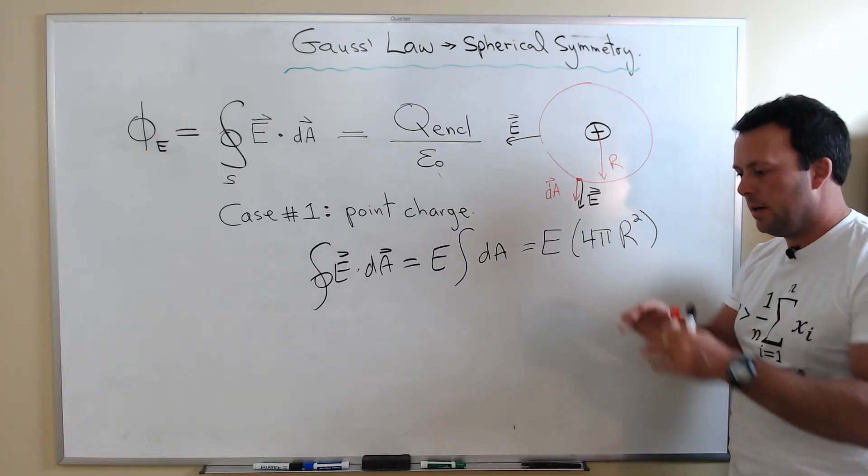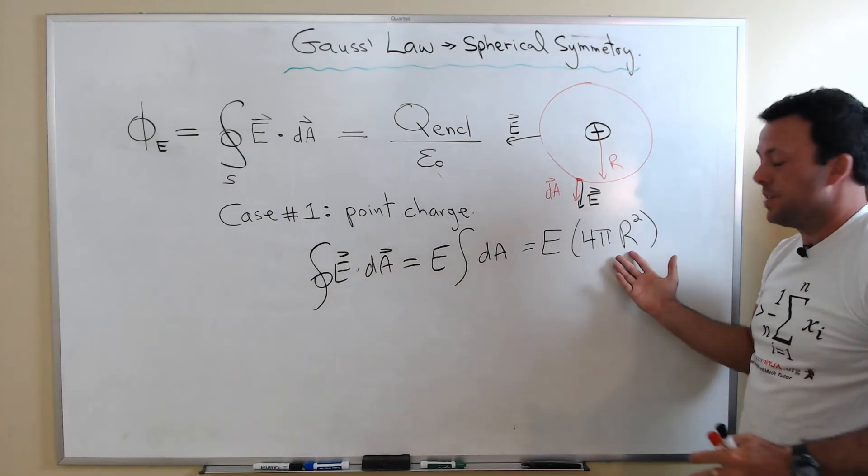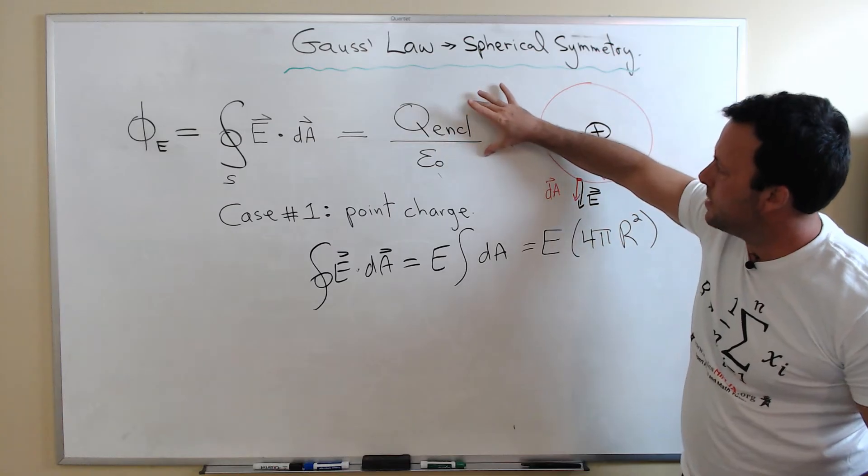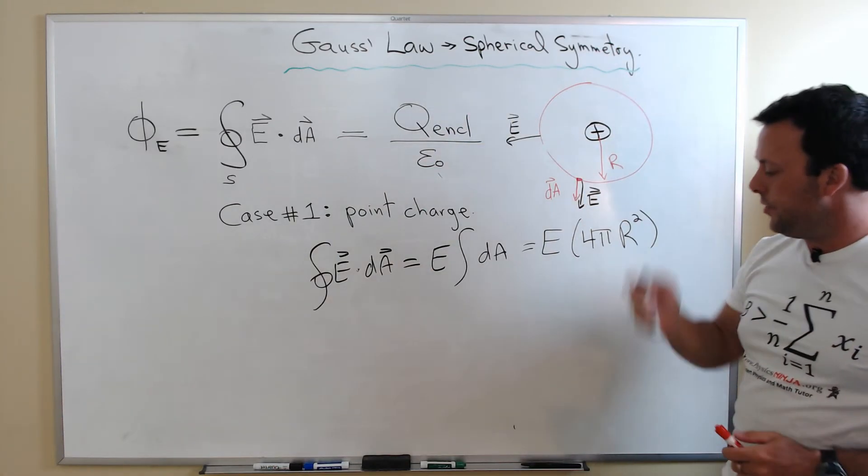...multiplied by the surface area of our Gaussian surface, which in this case is a sphere. So now all we have to do is worry about what the right-hand side of Gauss's law tells us, and that's even easier than the left-hand side.